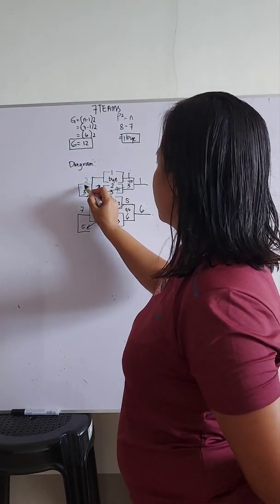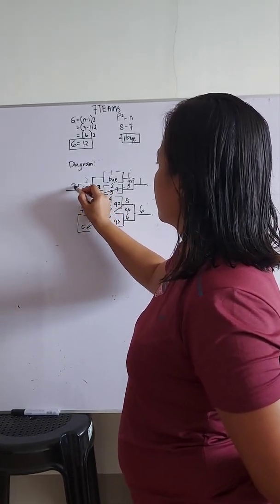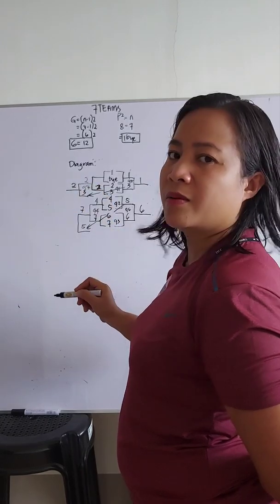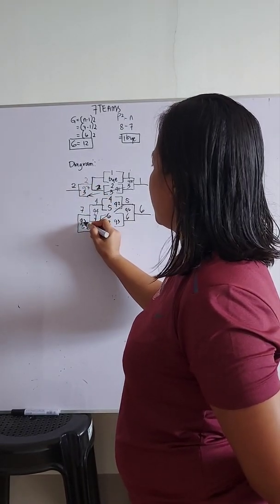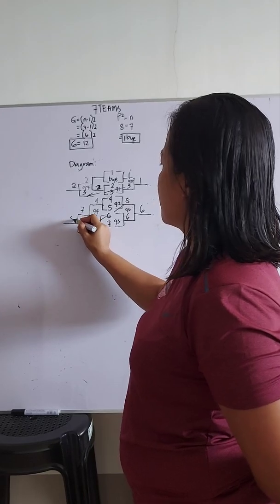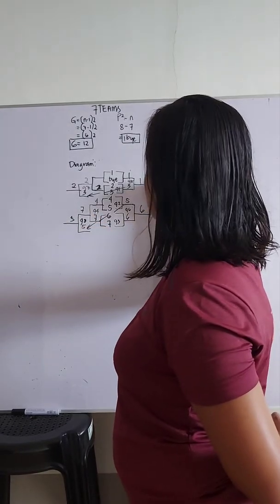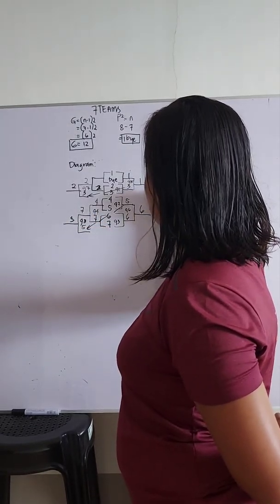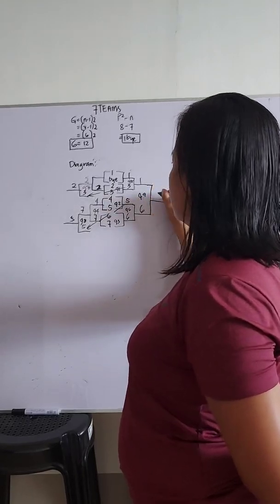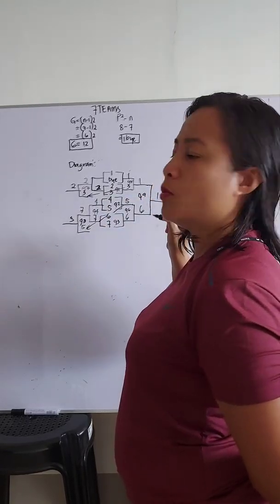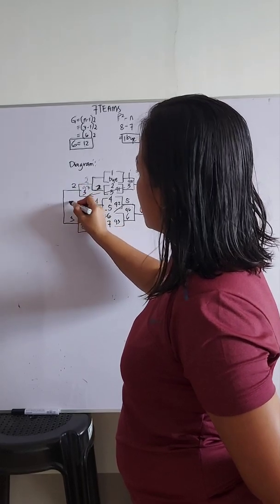Game 6 — team 7. Team 5 — so let's proceed here. Game 9 — team 1. So let's close the bracket.